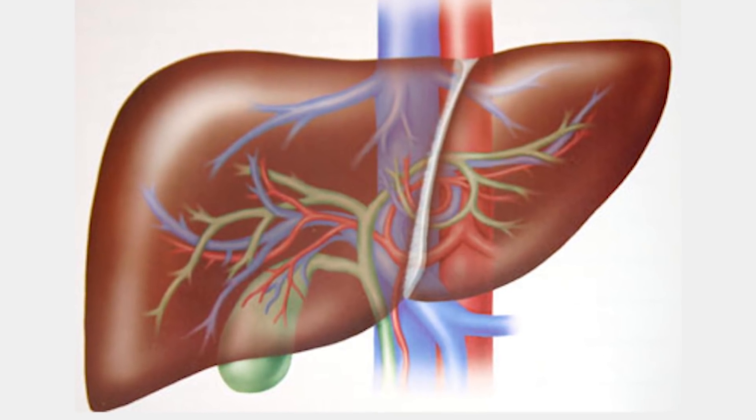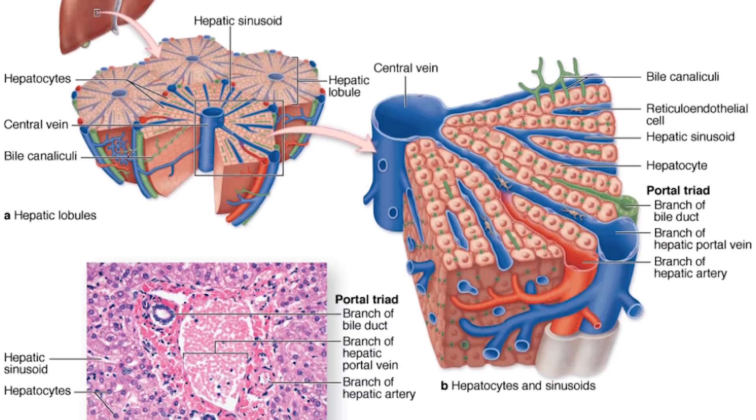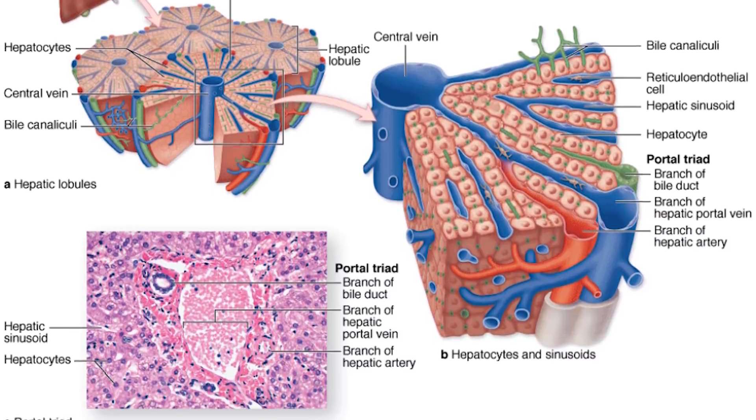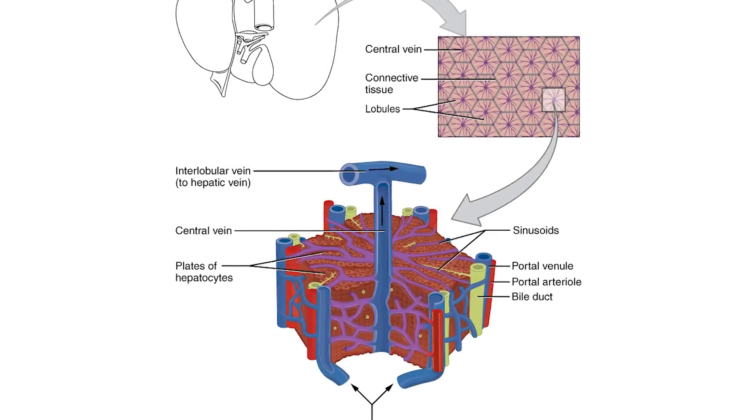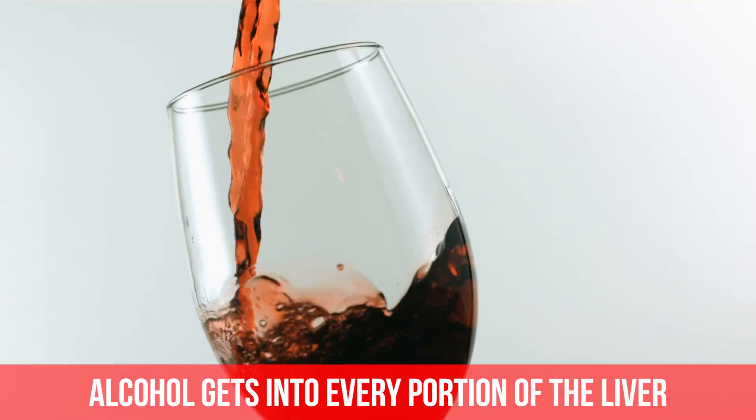From there, the alcohol - which is now partially broken down - travels through very small capillaries throughout the entirety of your liver, every nook and cranny. The liver is made up of lots of small micro-capillaries that filter things. So alcohol gets into every portion of our liver so it can handle it. Then the liver uses two enzymes to break the alcohol down even further, starting again with alcohol dehydrogenase, which begins breaking it down into something known as acetaldehyde.